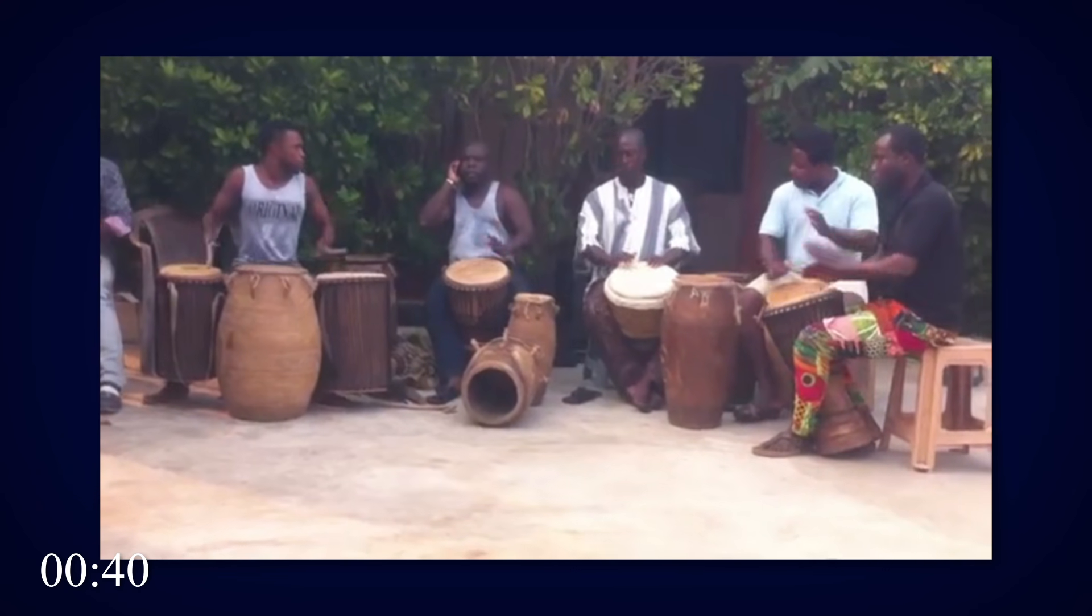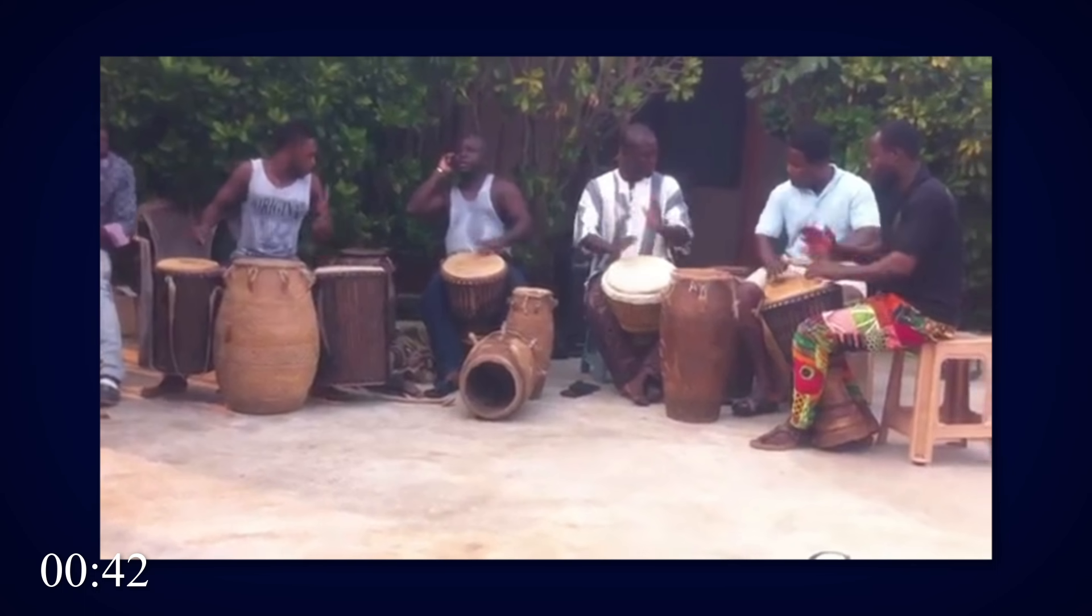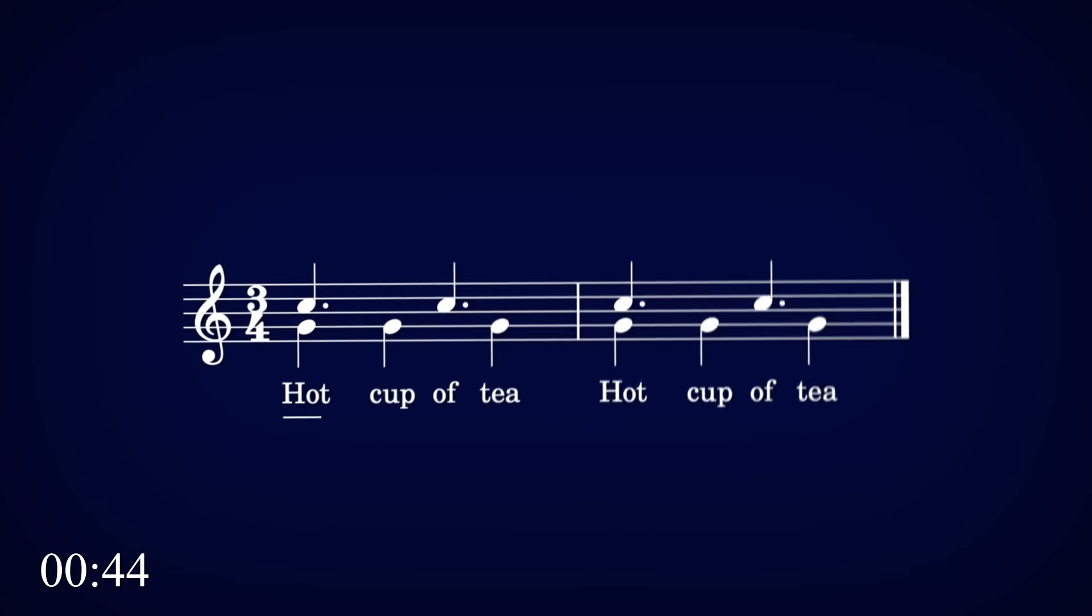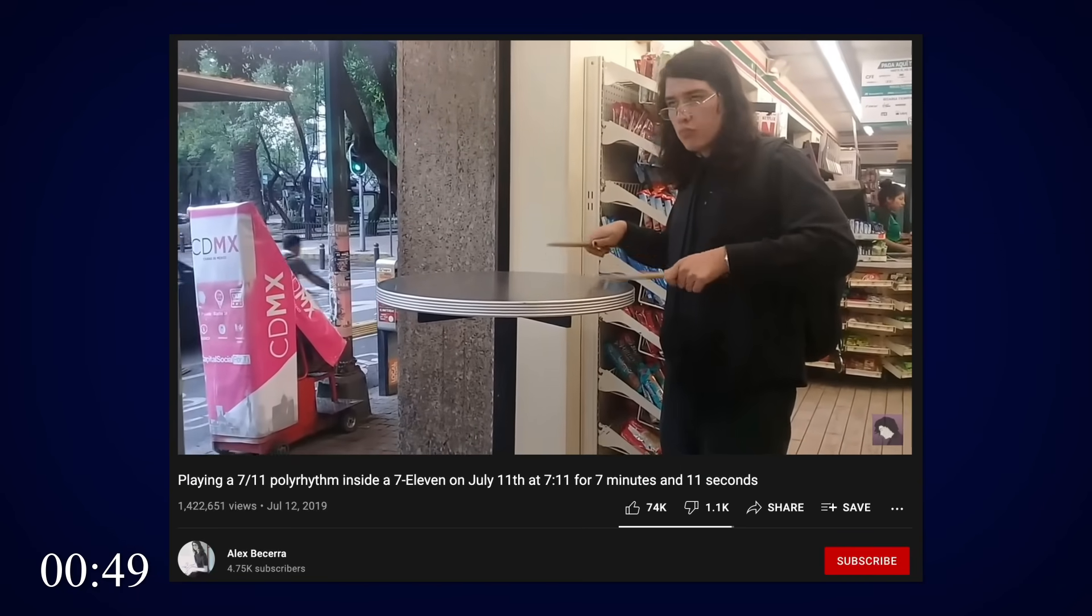African music is significantly more ambitious rhythmically, and often emphasizes the off-beats. One of the easiest polyrhythms to play is two over three. The 7-11 polyrhythm is a bit of a meme.